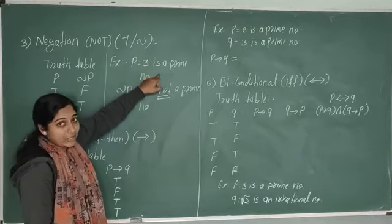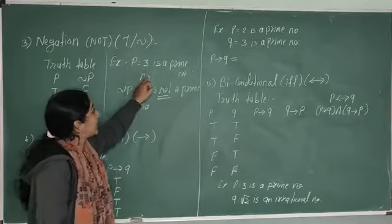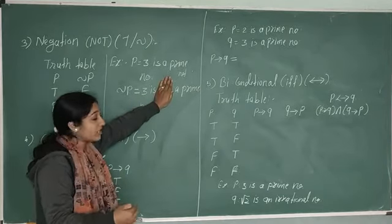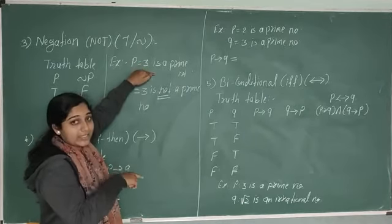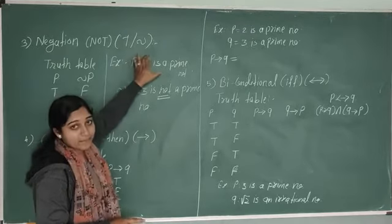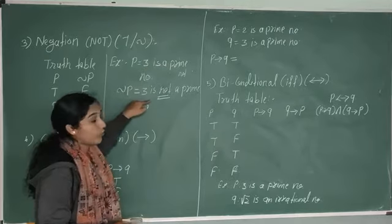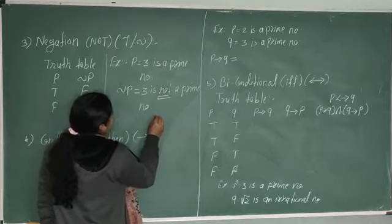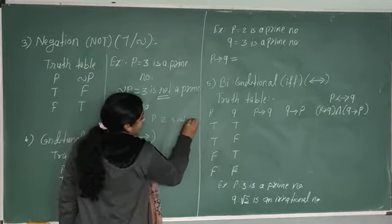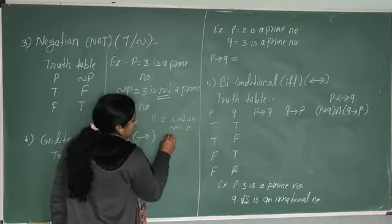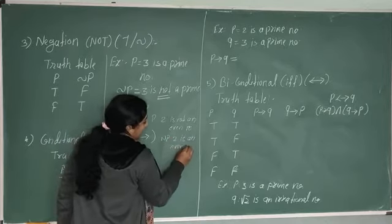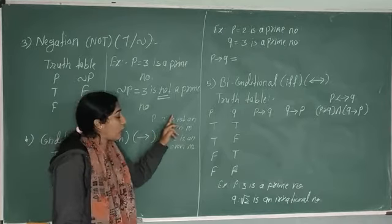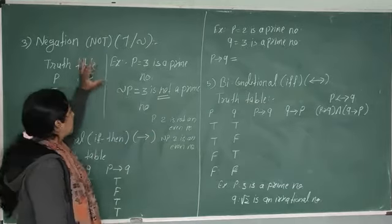Suppose in your statement itself it is given that '3 is not a prime number.' Then the negation of that statement is '3 is a prime number.' For a second example, if your statement P is '2 is not an even number,' then your negation of P becomes '2 is an even number.' These are the two examples of negation.